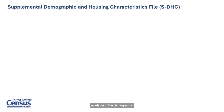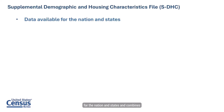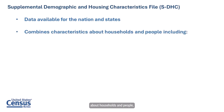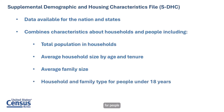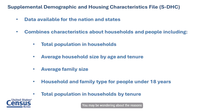Supplementing the data available in the Demographic and Housing Characteristics, or DHC, product, the SDHC tables reflect especially complex relationships between the characteristics about households and the people living in them. The SDHC data is available for the nation and the states, and combines characteristics about households and people, including the total population in households, average household size by age and tenure, average family size, household and family type for people under 18 years old, and total population in households by tenure.